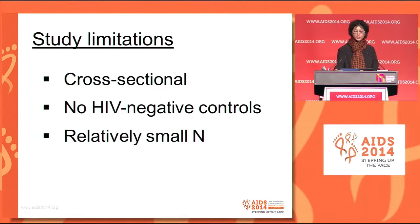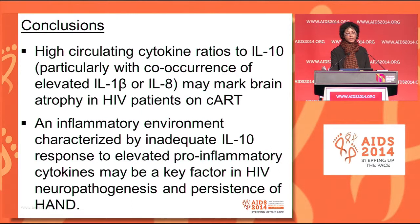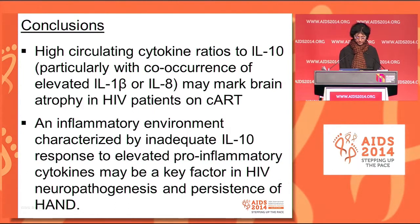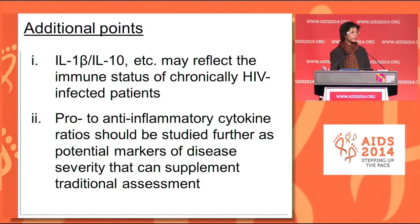Study limitations included the cross-sectional design, the lack of HIV-negative controls, and a relatively small sample size that prevented us from considering more variables. We conclude that high circulating cytokine ratios to IL-10 may be markers of brain atrophy in HIV patients on CART, especially with elevated IL-1 beta or IL-8. A central factor in HAND neuropathogenesis may be an inflammatory environment characterized by insufficient IL-10 response. If confirmed, ratios such as IL-1 beta over IL-10 may reflect immune status of chronically HIV-infected patients, and further study of pro- to anti-inflammatory cytokine ratios as potential markers of disease severity is warranted.